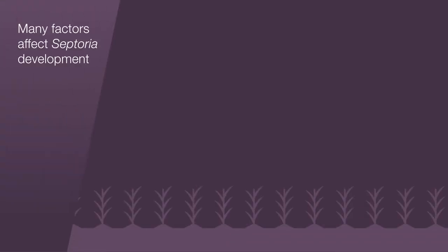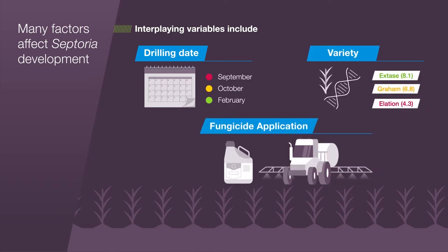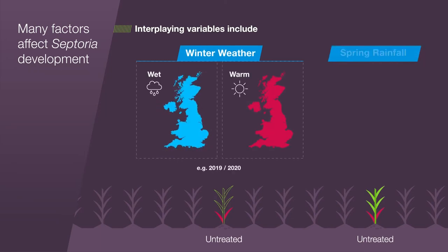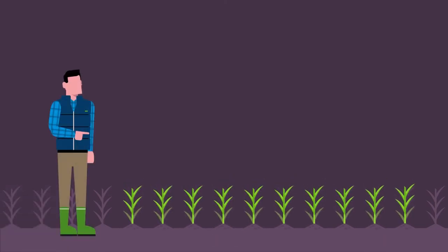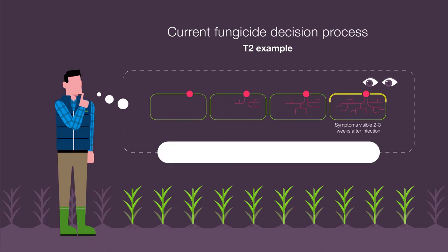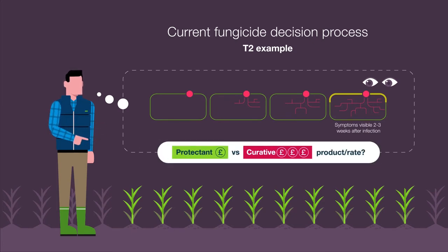Septoria management is further complicated by many interplaying variables which influence disease development. These include factors that we can influence, including drilling date, variety choice, and fungicide application, and also factors out of our control, including winter weather and spring rainfall. When we are making fungicide decisions in the spring, we can consider all of these factors, however we can't see how those factors have actually influenced disease levels, particularly in the upper leaves. This makes it difficult to make the right decision between a more protectant or more curative product choice and rate.